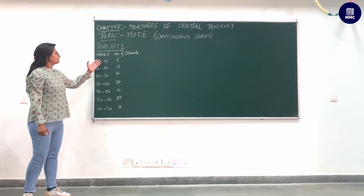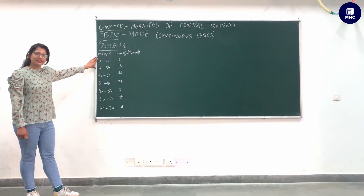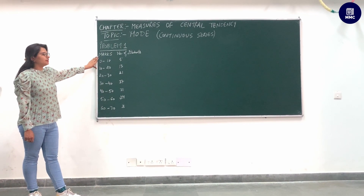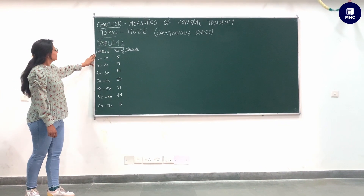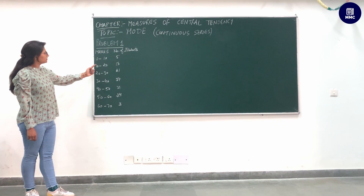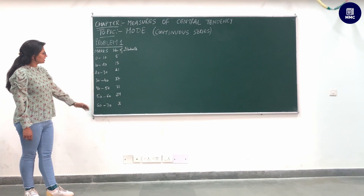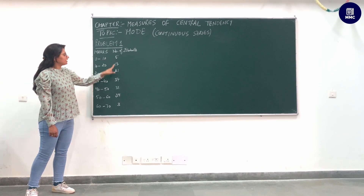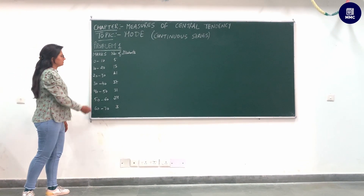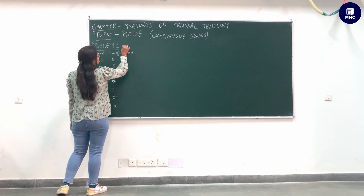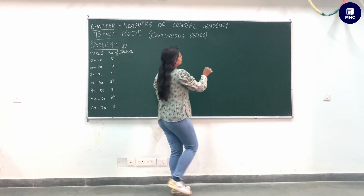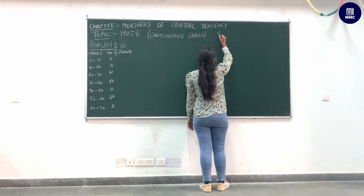As you can see, the problem is already written on the board, so we will start with the solution. Marks are given in continuous series intervals: 0 to 10, 10 to 20, and the last one is 60 to 70. The number of students is given. When the class intervals are given, this column is the frequency column.